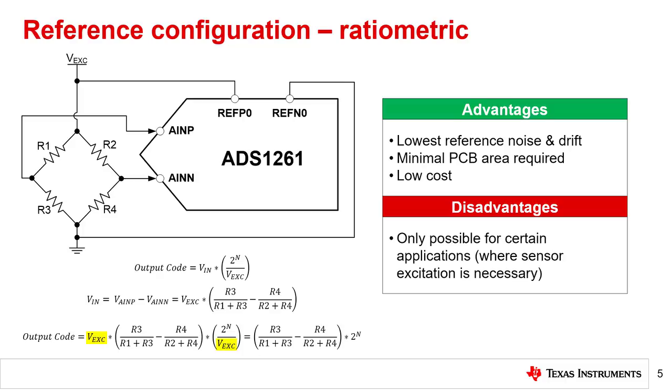Using a ratiometric reference configuration enables noise performance that is much closer to the shorted input case. In general, this configuration yields the lowest amount of total noise compared to the other two configurations.